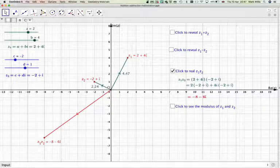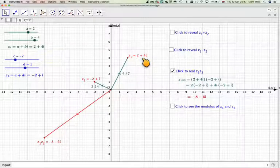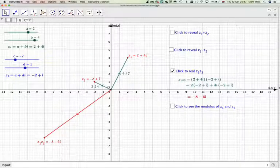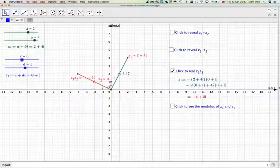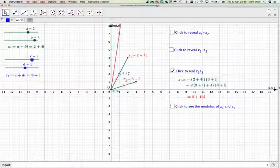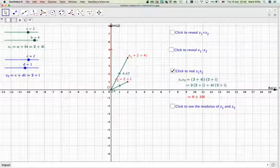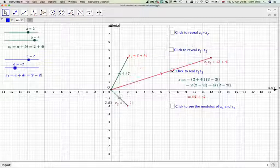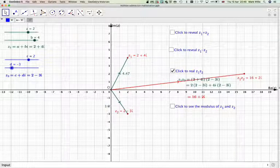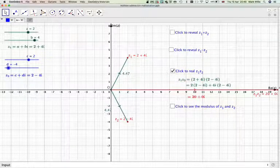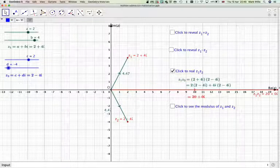And what will be quite interesting is if I make Z2 the conjugate of this one here. So that means it will be, C would have to be 2. And D would have to be minus 4.